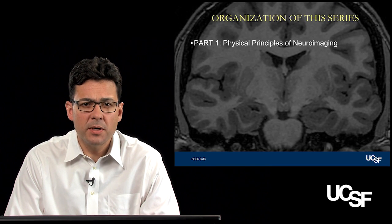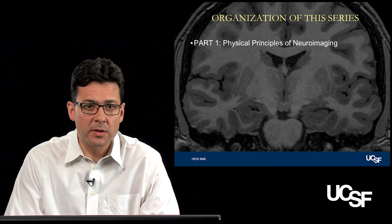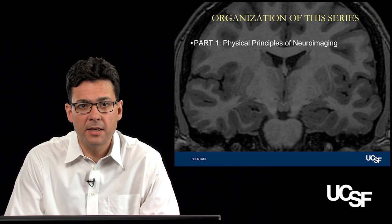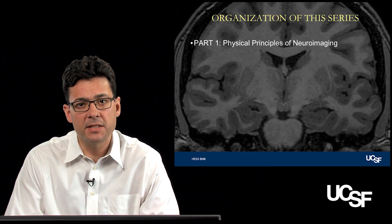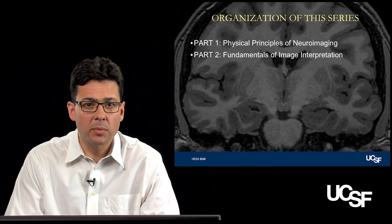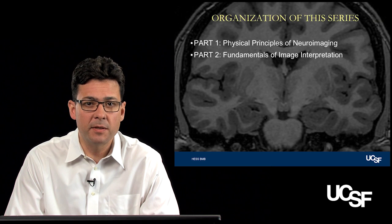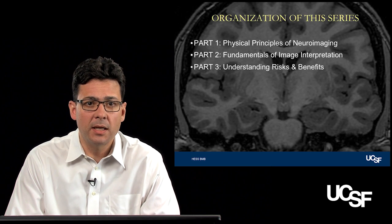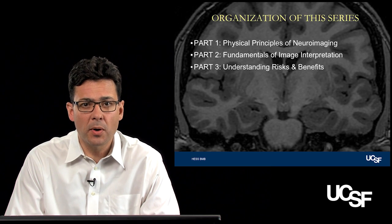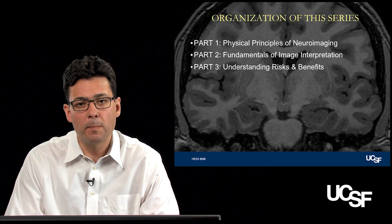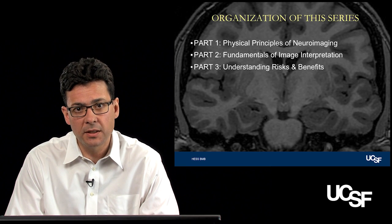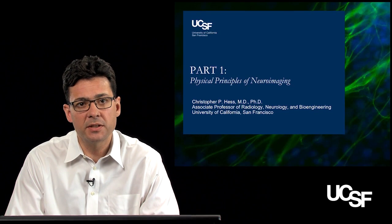In this series, we'll be covering neuroimaging. It's divided into three parts. Part one, we'll be dealing with the physical principles of neuroimaging, specifically CT and MRI. Part two, we will focus on fundamentals of image interpretation. And in the third part, I'd like to discuss some of the risks and benefits and how you might go about choosing MRI or CT for your patient.